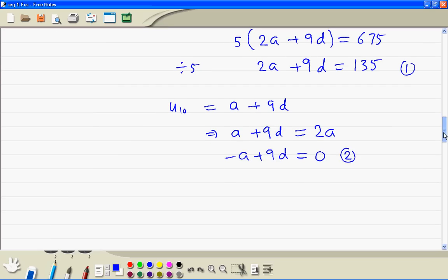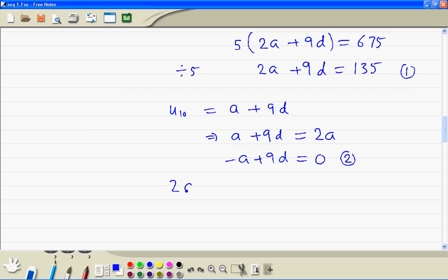We write these two equations next to each other. So we have 2a plus 9d is equal to 135. Here we have minus a plus 9d is equal to 0.